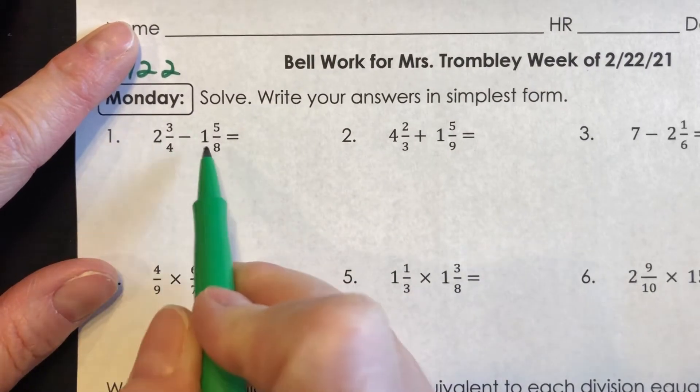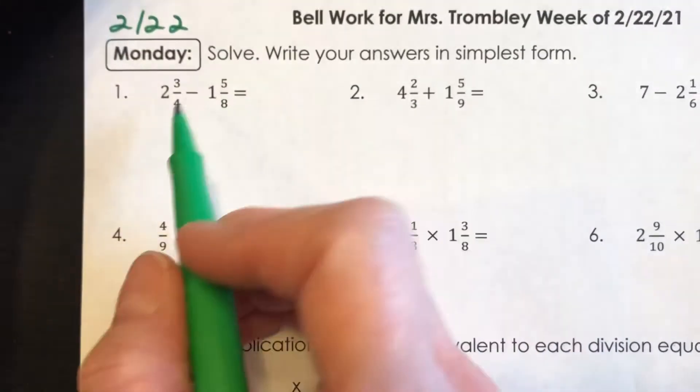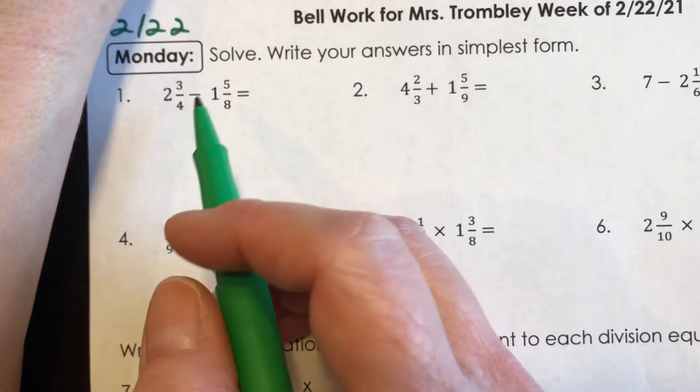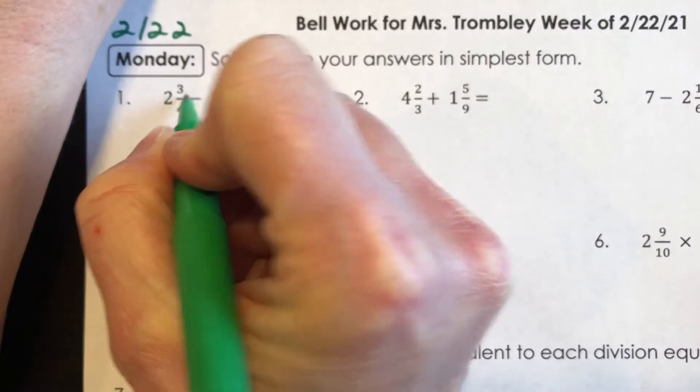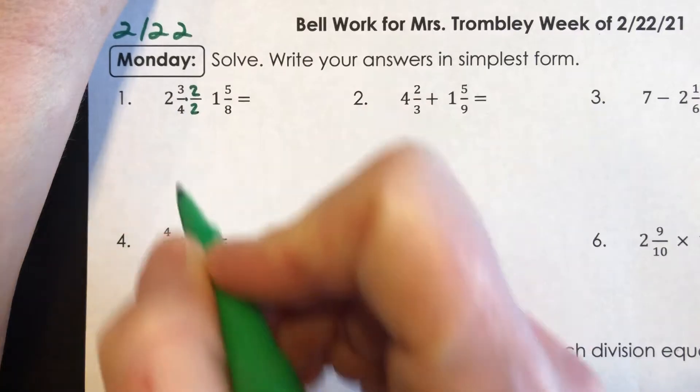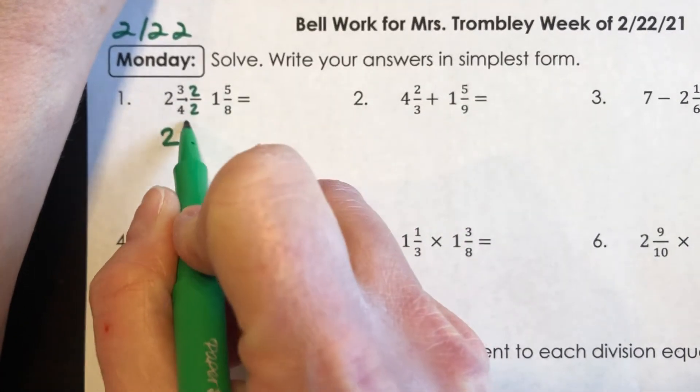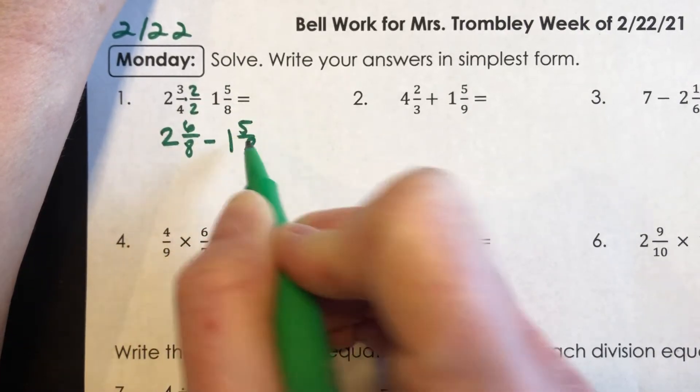Number one, I have two and three-fourths minus one and five-eighths, and the first thing I notice is that this is subtraction, and I don't have a common denominator. So I need to get one. And I notice that four times two is eight, so I'm going to multiply this three-fourths by two over two.